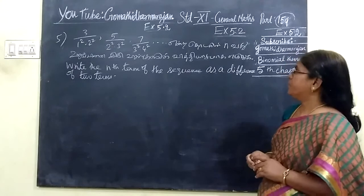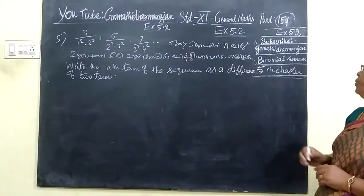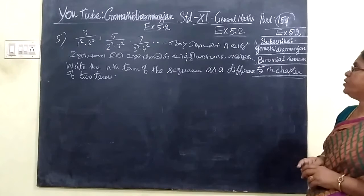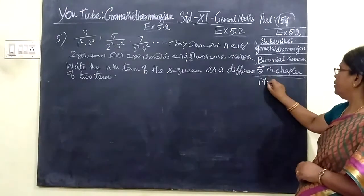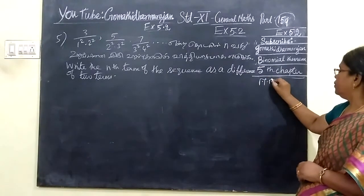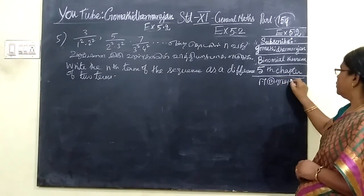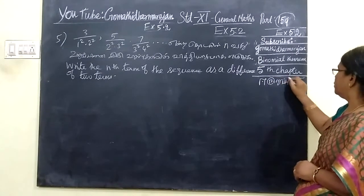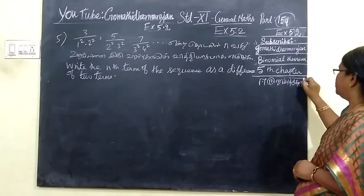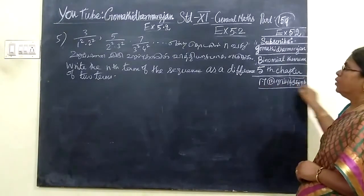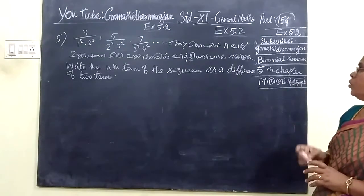General match. Binomial. Binomial match. This is the third factor. This is the fifth question — it is a sequence.